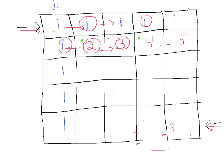We proceed in exactly the same way for the next row. For the second box on the third row, if I come from the left there's one way, and if I come from the top there are two ways, so one plus two gives me three in this box. For the next box, there are three ways to come from the left and three ways to come from the top, giving six ways to get into this box. The next one is exactly the same idea — coming from this direction or from this direction — and that gives me ten ways to have gotten in here.